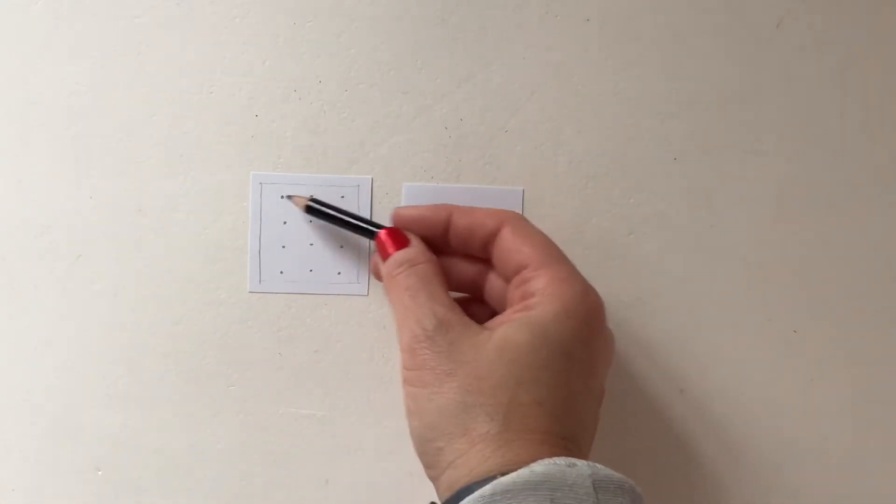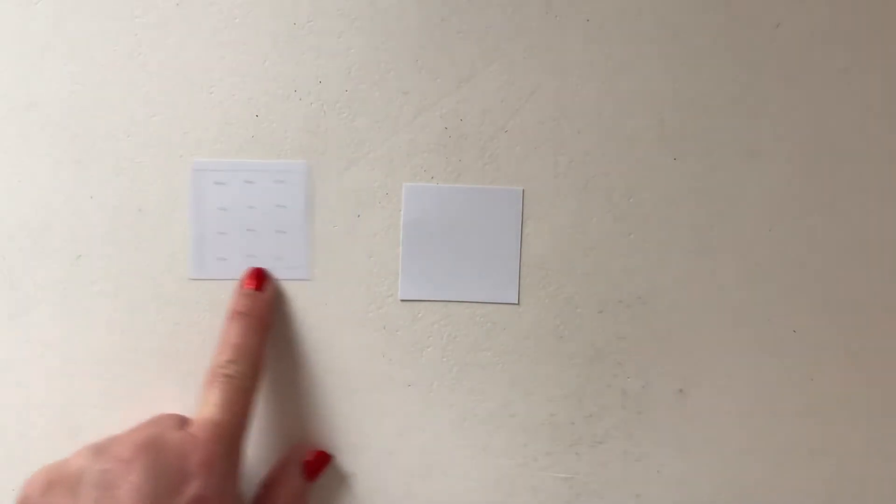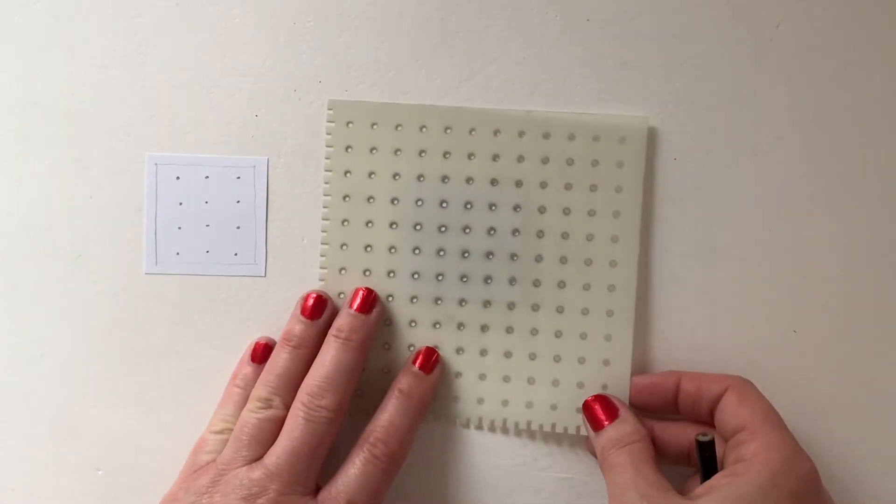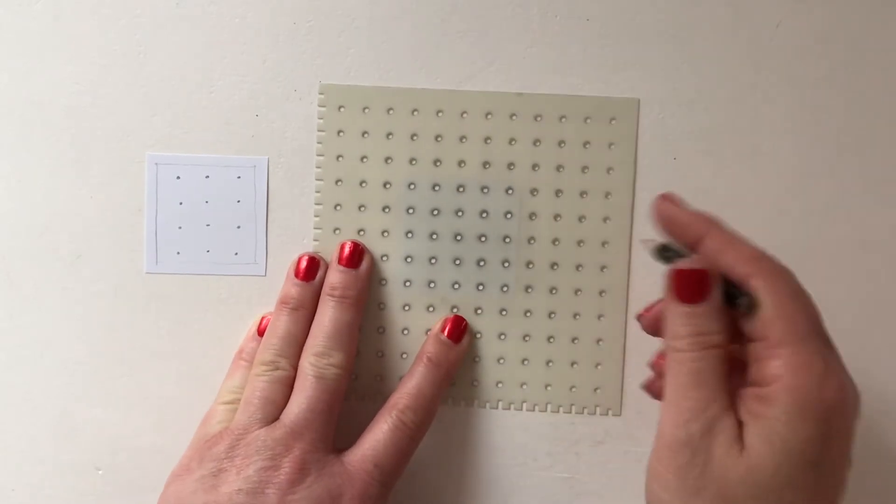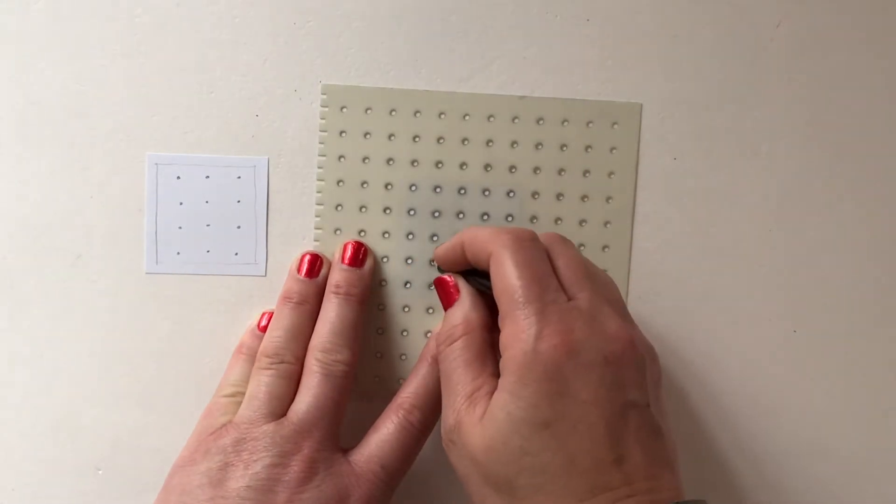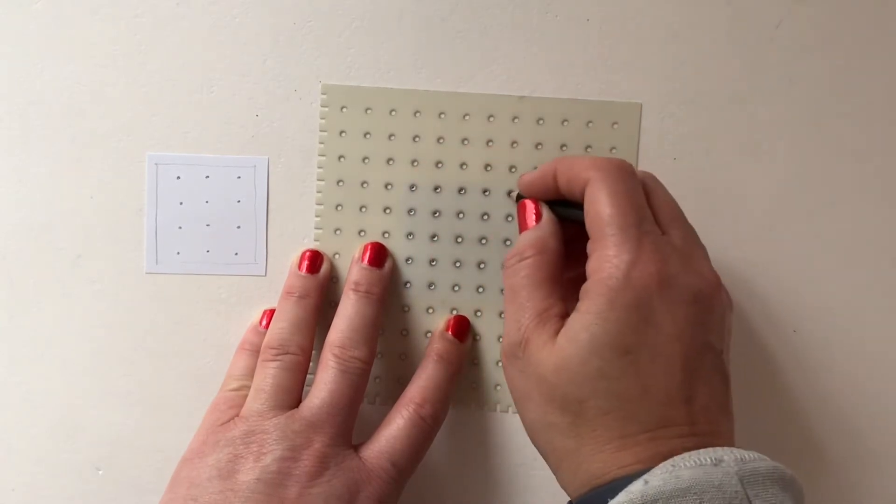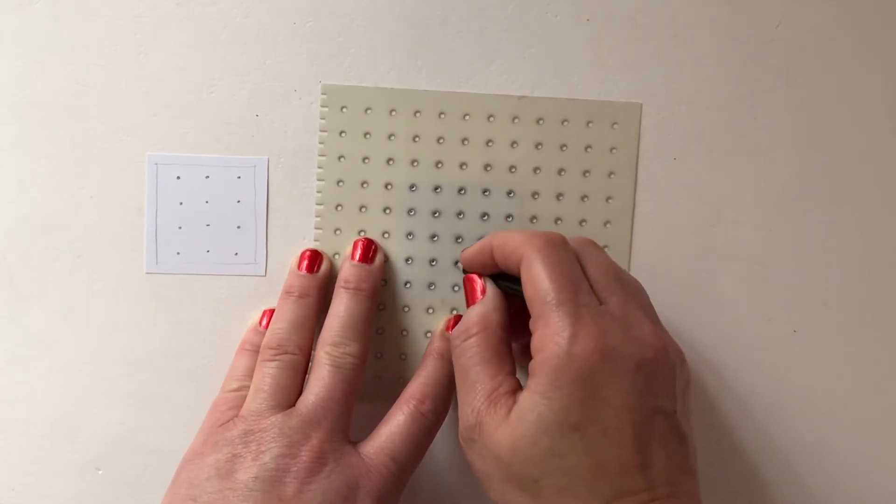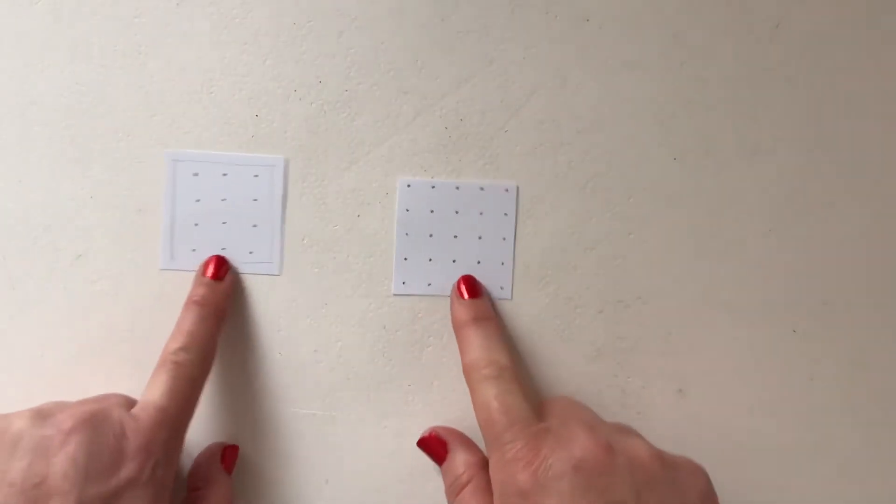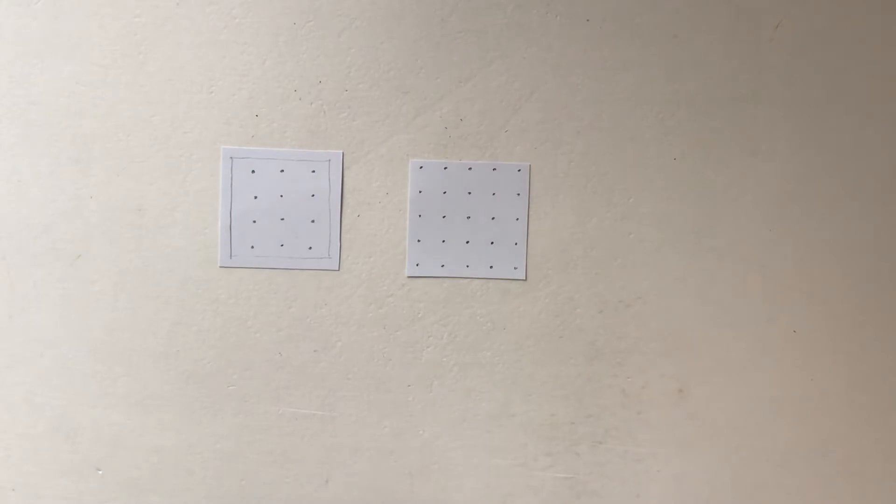You'll notice that they're a similar distance apart both across and down. For those of you that do struggle and would prefer to use something a little bit more, well, to make it easier for you, I'm just using this dotty stencil here. This was just designed for those that do have dexterity issues or for the younger children that struggle to get the dots of equal distance apart.